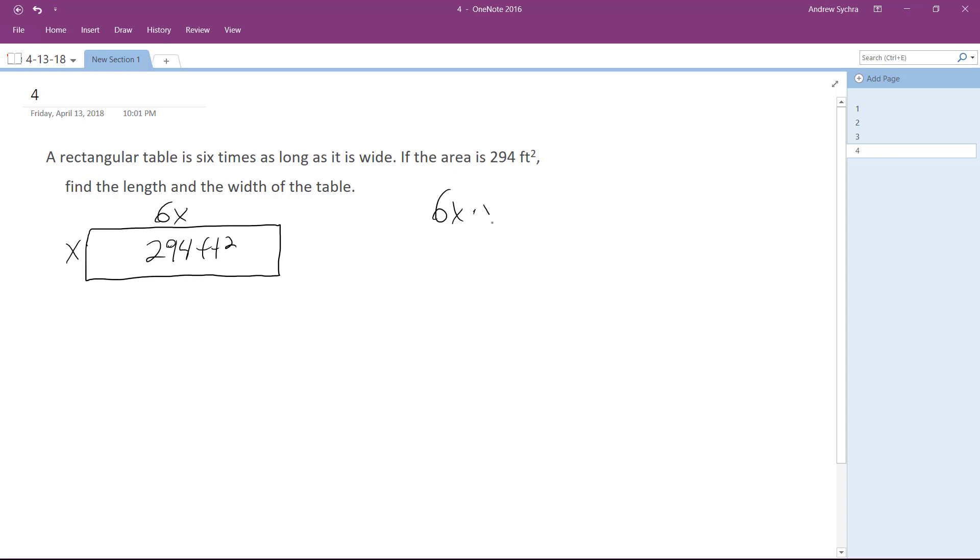Alright, so 6x times x equals 294, 7x squared is equal to 294.